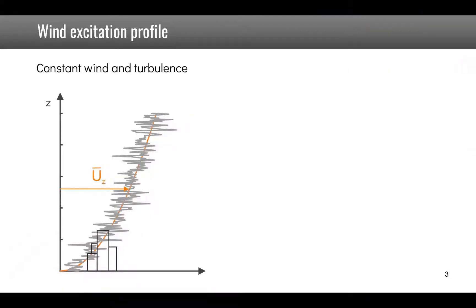As an example of flow induced vibration let us look at the example of wind hitting a building. What you see here is that the velocity of the wind can be decomposed into a constant part which is represented in orange and a turbulent part.